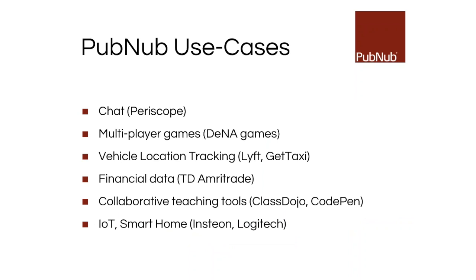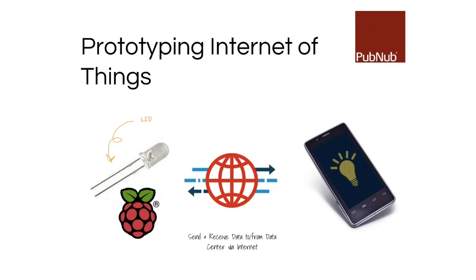There are also many interesting collaborative applications, and IoT and smart homes. One real-world example is Periscope, which is part of Twitter. When you're video-casting from your phone, people can add comments and send hearts. Each of those hearts is actually a published message — it's quite an interesting use case.